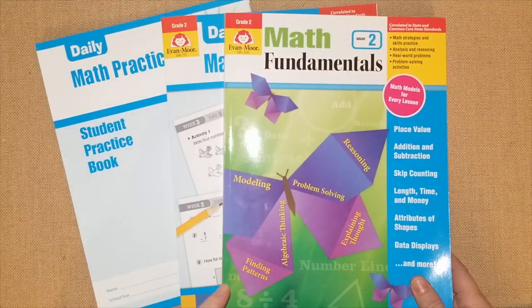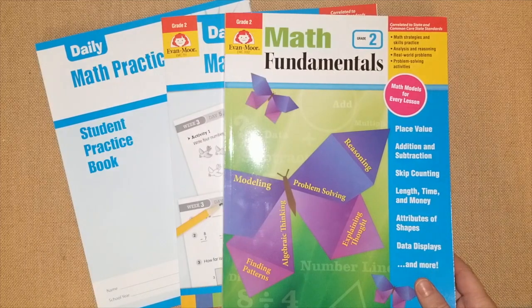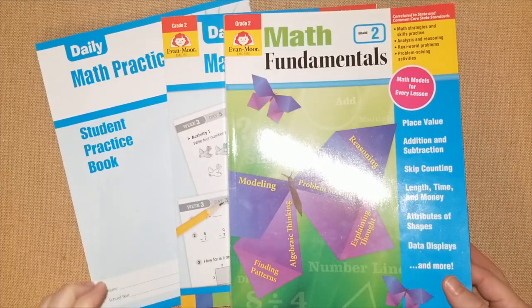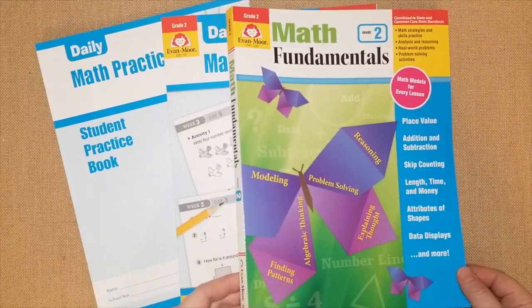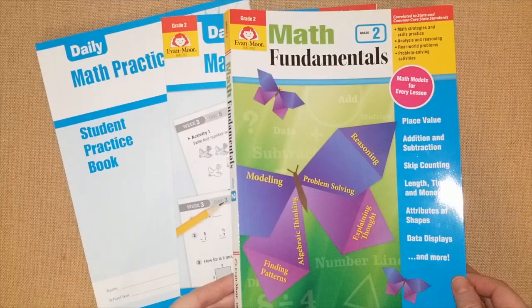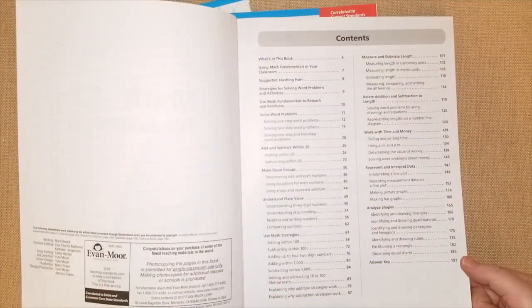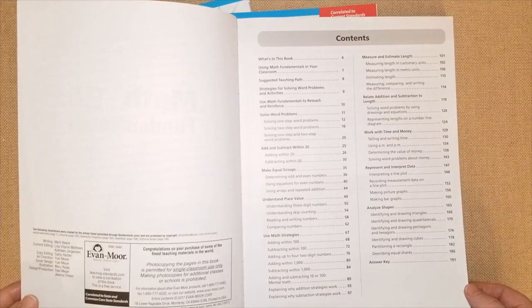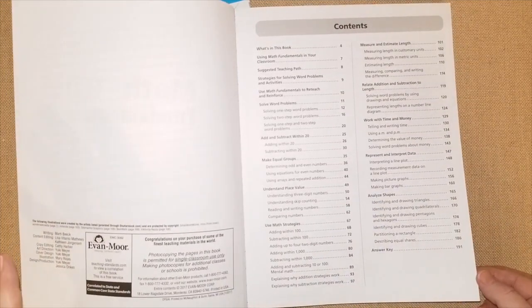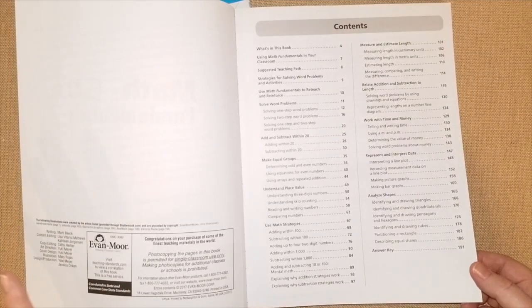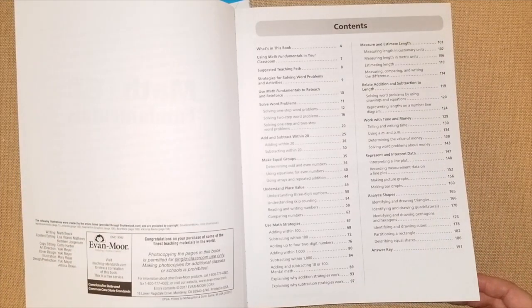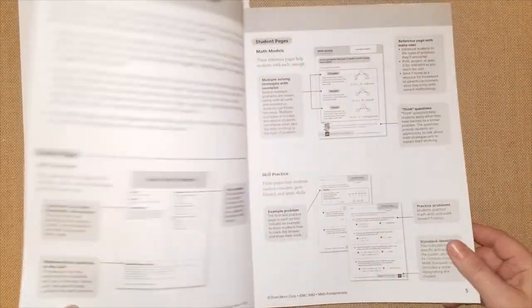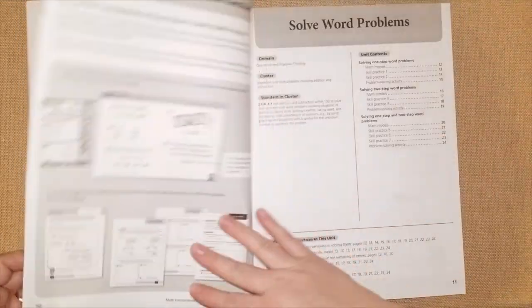I wanted to first start sharing Math Fundamentals with you guys for grade two. Now this is the Common Core State Standards, so this is a book that is going to be a game changer for a lot of homeschool parents or parents in general helping with their kids homework or teachers. You could pause this page if you want to see everything that they're going to be going over. They're going to be going over all of the state standards, all the Common Core State Standards, so they're going to be talking about place values, math strategies, analyzing shapes, measuring time and money.